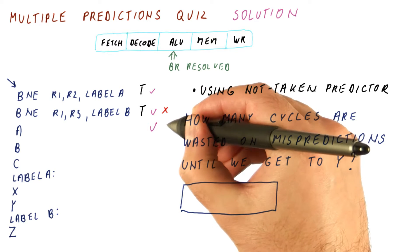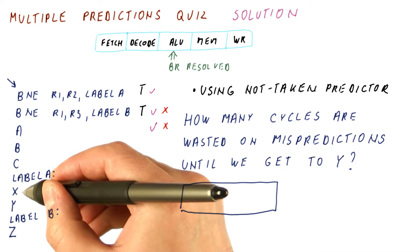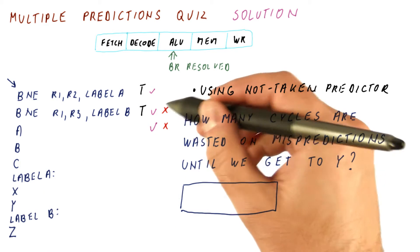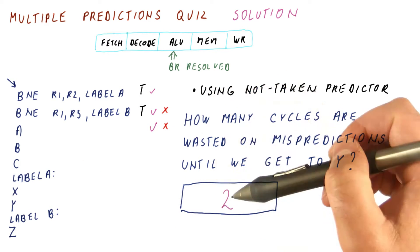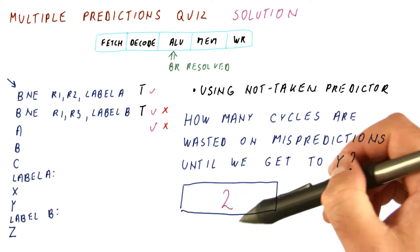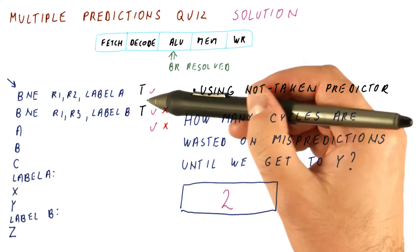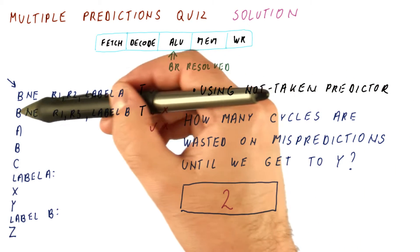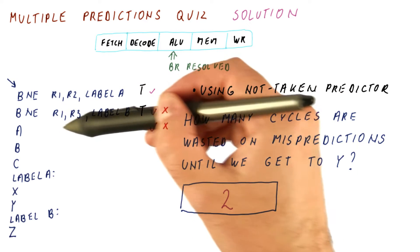So we will cancel this and this instruction and start fetching from X and then Y. So overall, we have wasted two cycles. Note that this penalty here is the same as if the second instruction here was not a branch at all.